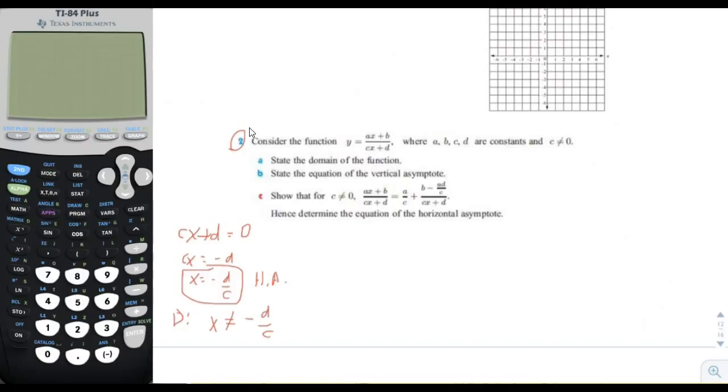All right. So that's a. And then b, it says state the equation. Oh, I'm sorry. That's the vertical asymptote, not the horizontal asymptote. I keep getting confused. Sorry. So the vertical asymptote is x equals negative d over c, and the domain of the function would be x is not equal to negative d over c. All right, let's go to c.